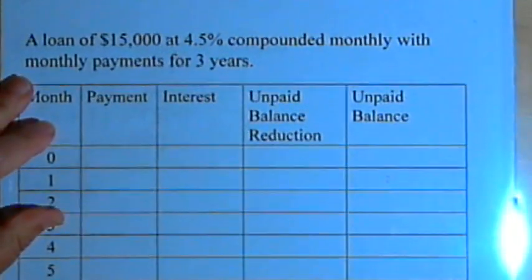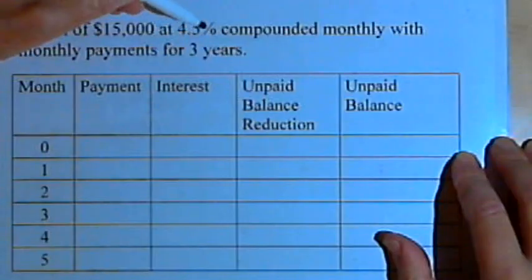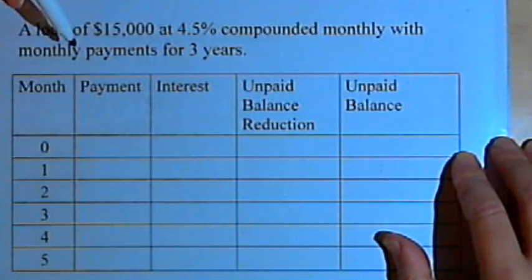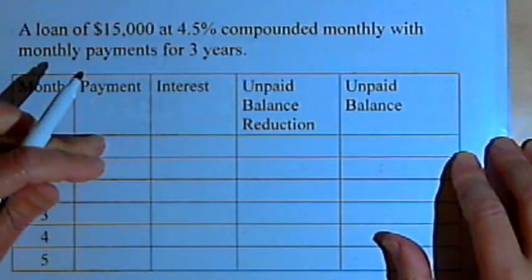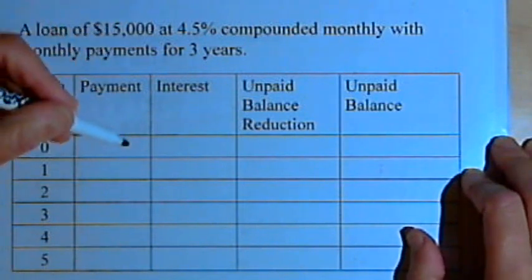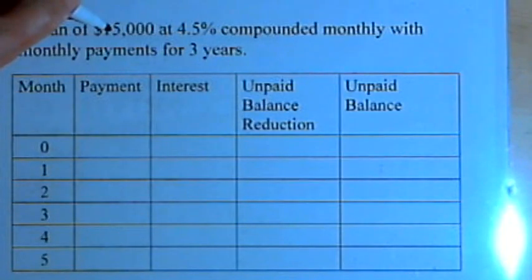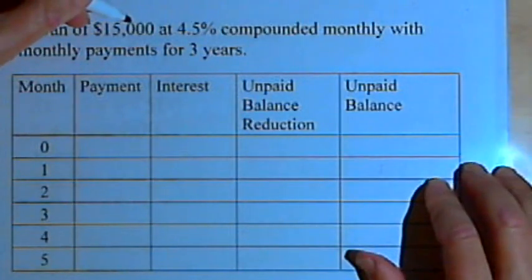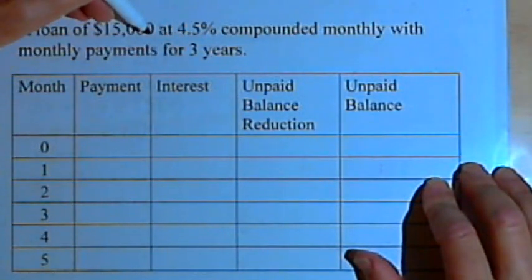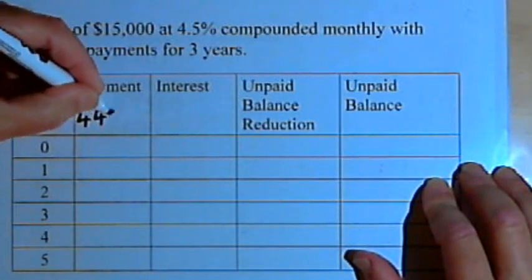Imagine you've got a situation like this: you've taken out a loan for $15,000, it's at 4.5% compounded monthly, and you've got monthly payments for three years. We have to make an amortization table for that situation. We're going to use the present value formula to figure out what the monthly payment amount should be, and the monthly payment would be $446.20.